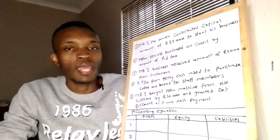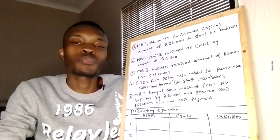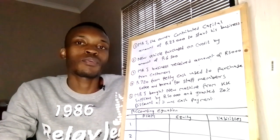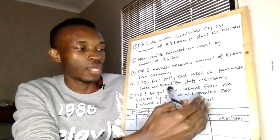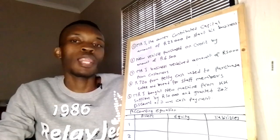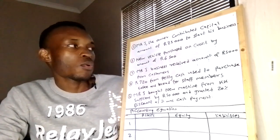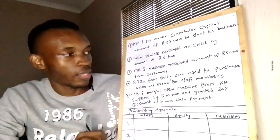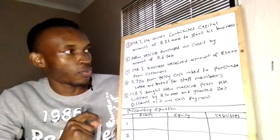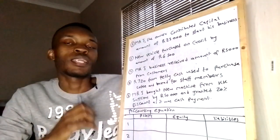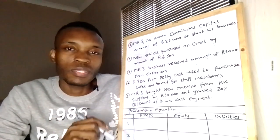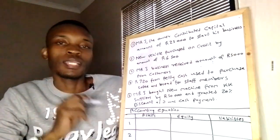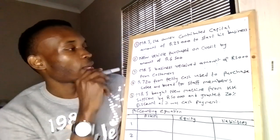Our last part is liability — something like a loan payable. When we purchase something on credit from a supplier, it will fall under liability. I've done some examples that I want you to go through so that you will understand the accounting equation much better.